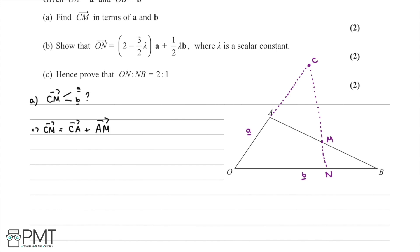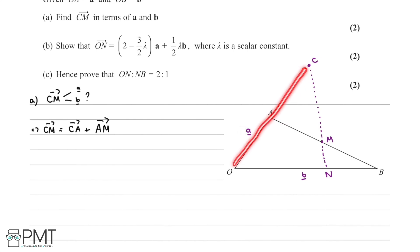We want to find vector CM in terms of a and b, so we need to convert CA into something in terms of a. We know that the distance OA equals the distance AC, so to go from C down to A is going to be negative a, as this is just an extension of that line. So CA is equal to negative OA, which is equal to negative a.